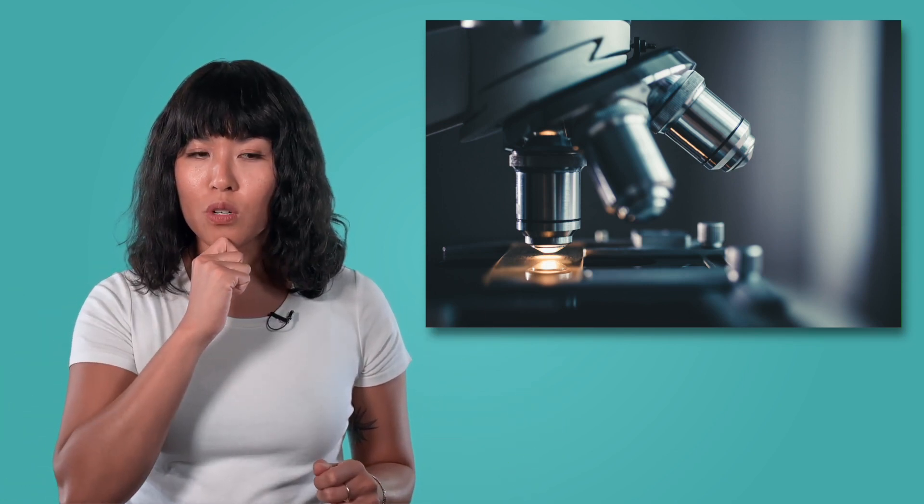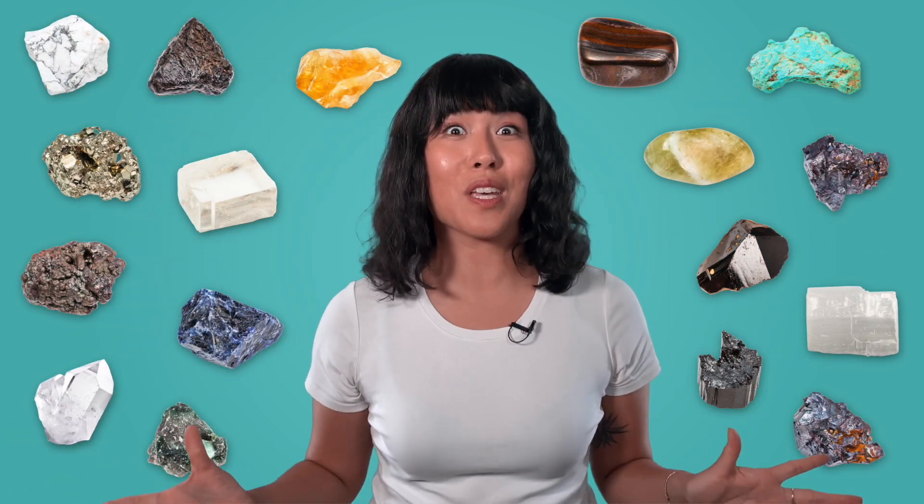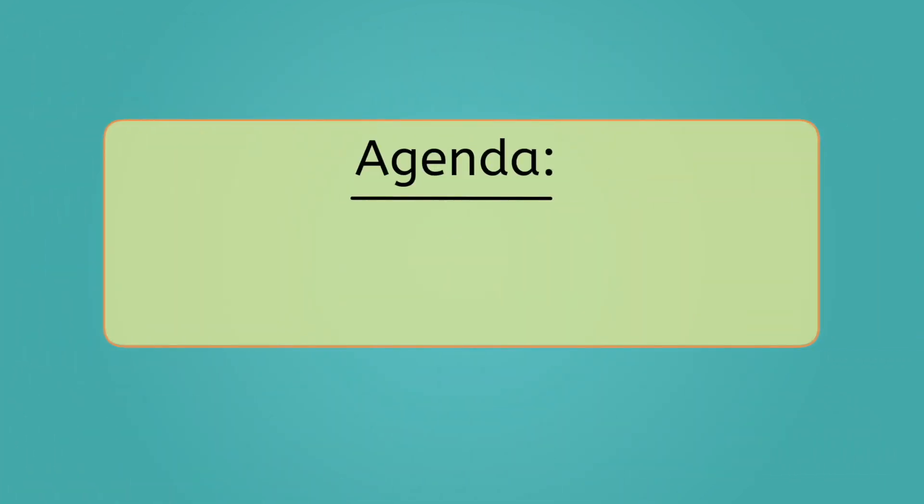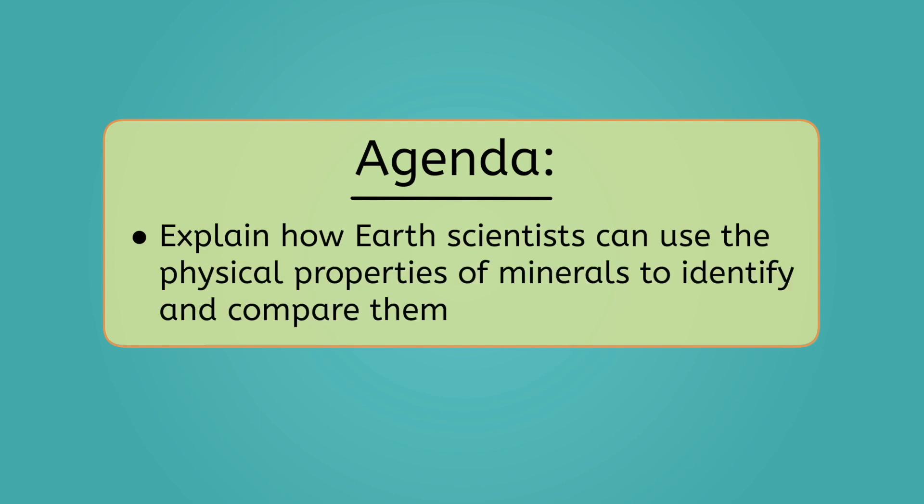Maybe they looked at them under microscopes or traveled back in time to see how they were formed? Well, to get my rock collection back in order, we'll need to figure out how Earth scientists tell the difference between the thousands of different minerals found on Earth. By the end of this lesson, you'll be able to explain how Earth scientists can use the physical properties of minerals to identify and compare them. Let's get started!